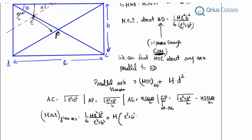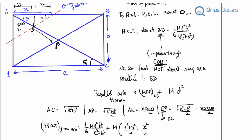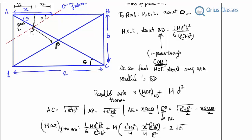Expanding, we get (L²+B²)/4 + X²·sec²θ/4 minus twice of √(L²+B²)/2 times X·secθ. We substitute secθ from the triangle: secθ = √(L²+B²)/L, so sec²θ = (L²+B²)/L².